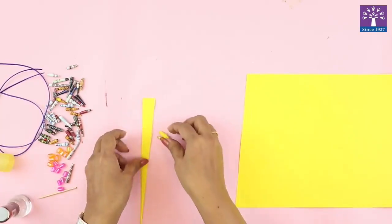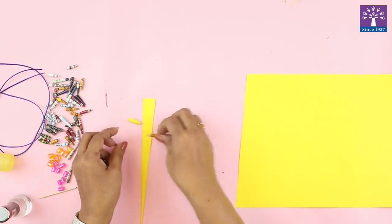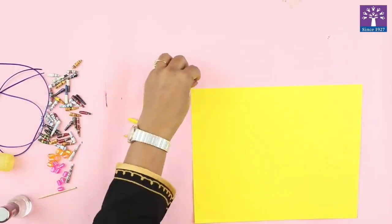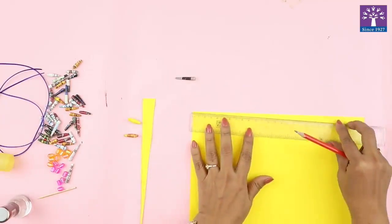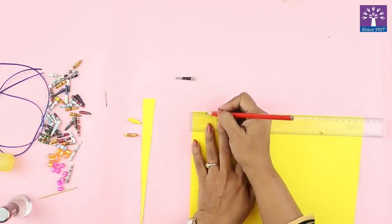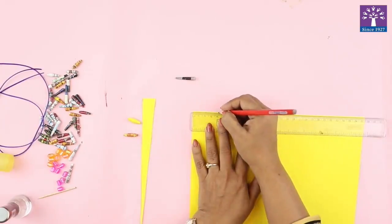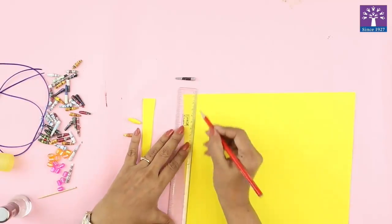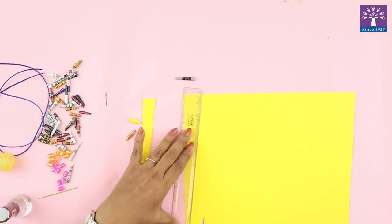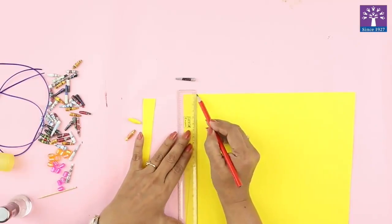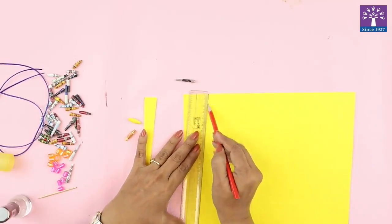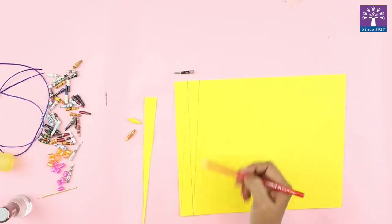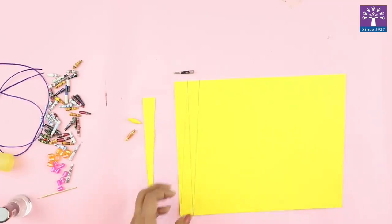So for this we used this V shape. Now to make this cone shape, mark 2 cm and we will draw a slant line. See, so this is a straight line and this is a slant line. We will cut this.